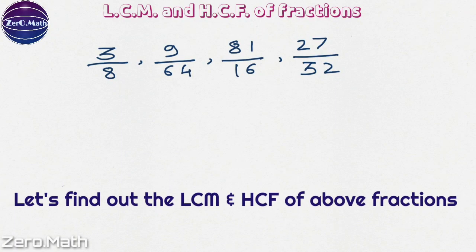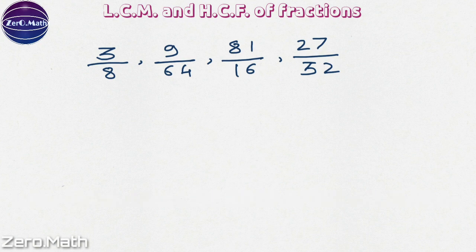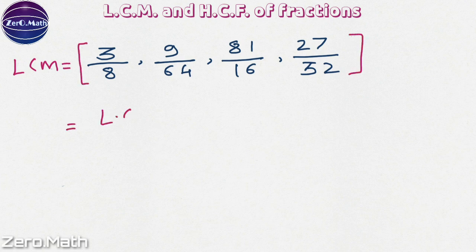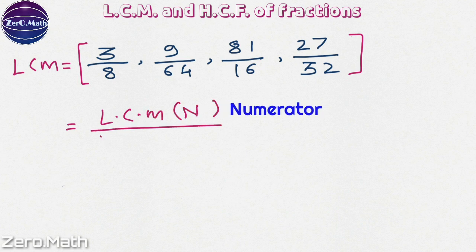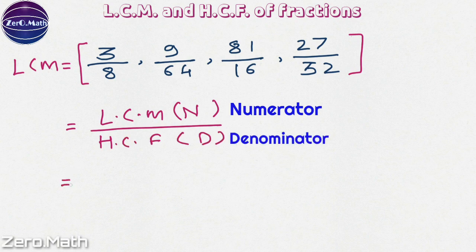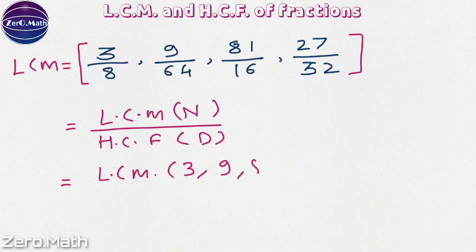Let us figure out the LCM and HCF of the given fractions. Let us first figure out the LCM. The formula to find out the LCM of a fraction is: LCM of numerators over HCF of denominators. We have 3, 9, 81 and 27 at the numerator. So let us figure out the LCM of 3, 9, 81 and 27. At the denominator, we are having 8, 64, 16 and 32.